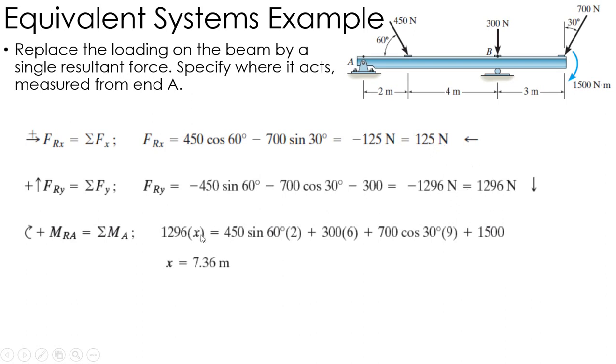So I just take my unknown location X times my vertical component in the Y direction, so 1296. So this is my resultant force times the distance I'm looking for equals my resultant moment, which is the sum of the r cross Fs plus any couple moment. Solving this equation for X, I get 7.36.